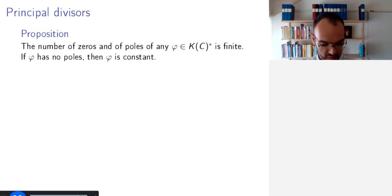So, this brings us now to the notion of a principal divisor that will make precise what we wanted to do earlier. So, first, a proposition that the number of zeros and of poles of any rational function phi in K(C), that is not identically zero, is finite. And if phi has no poles, then phi is constant.